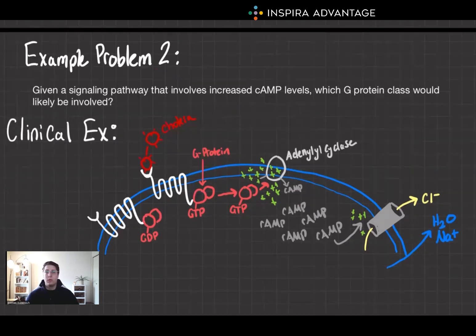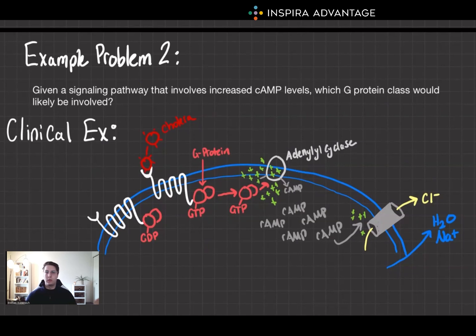When studying for the MCAT, we're ultimately interested in becoming doctors — so what is the clinical implication? Why does this matter? Defects in G-protein signaling can lead to various diseases. For instance, cholera toxin interferes with G-protein function, preventing it from turning off. This leads to constant cyclic AMP production and consequently severe water loss in the intestines due to extreme diarrhea.